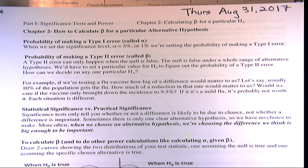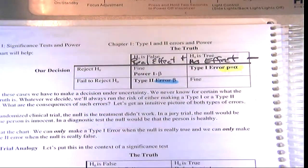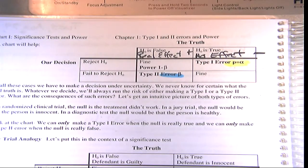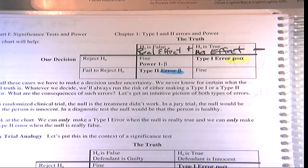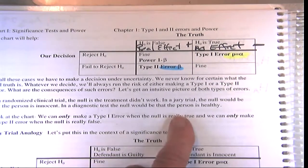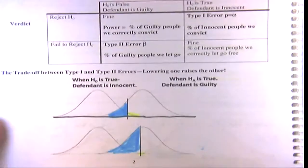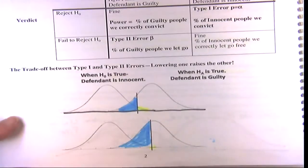Any other questions before we start? Where we left off last time was talking about Type 1 and Type 2 errors. The examples on the previous page were very basic simple examples where you just have one alternative. The null hypothesis for these problems were straightforward.